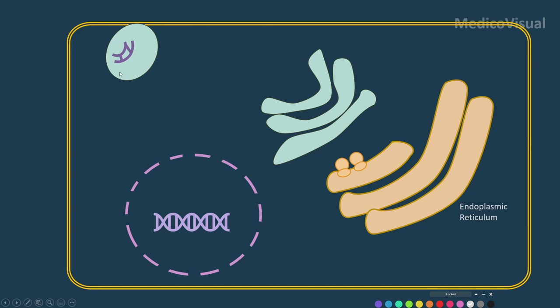Not only insulin is secreted — along with insulin we also have another protein called amylin, also known as islet amyloid polypeptide (IAPP). Its synthesis is very similar to insulin: first there is pre-pro-amylin or pre-pro-IAPP, then pro-IAPP, and ultimately amylin is formed.